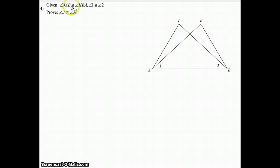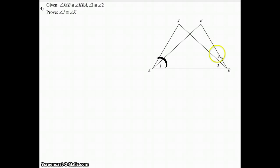The first thing we're going to do is look at what's given. We're told that angle JAB — which is this entire angle right here — is congruent to angle KBA, which is this entire angle right here. We're also told that angle one and angle two are congruent to each other. Angle one is just this part right here, and angle two is just this little part right here. With that, we have to come up with the rest of this proof on our own.